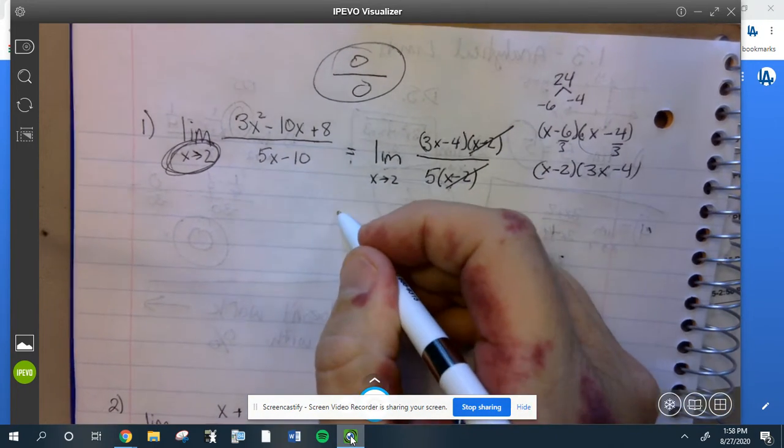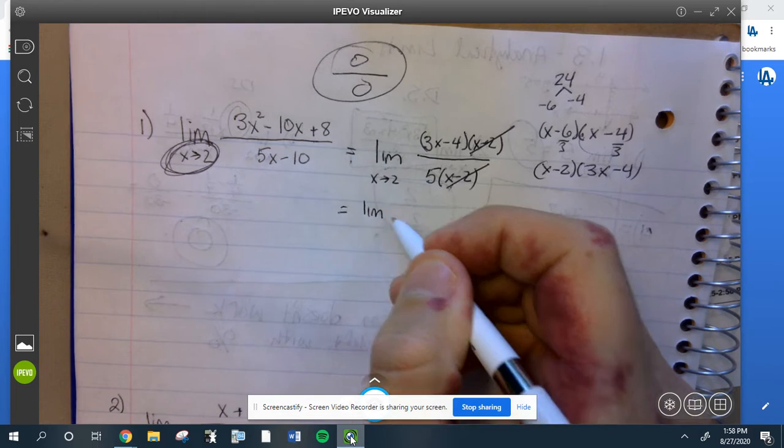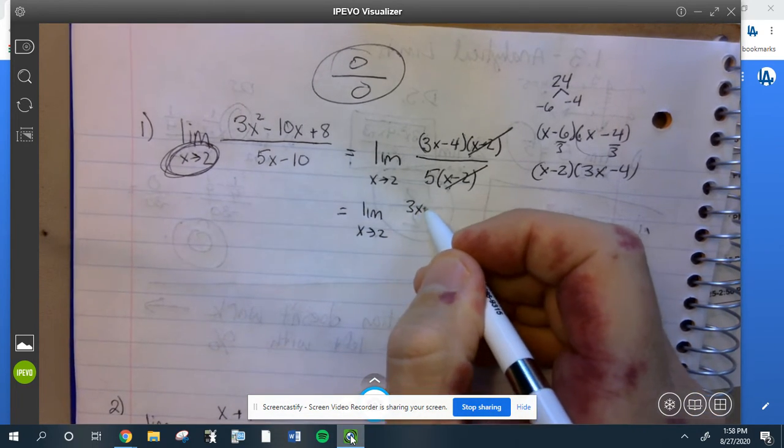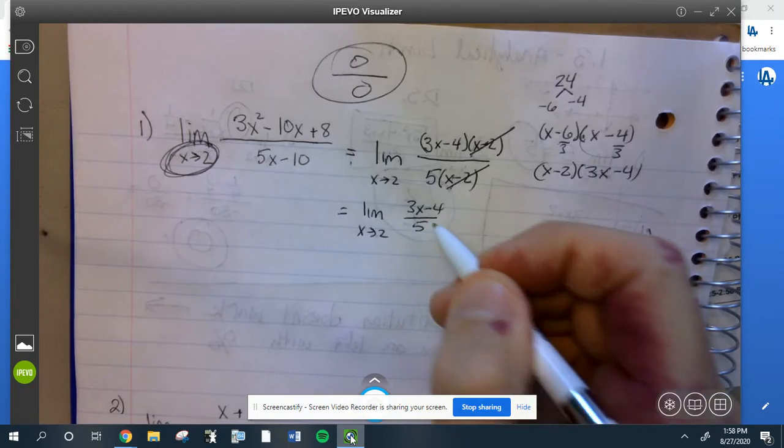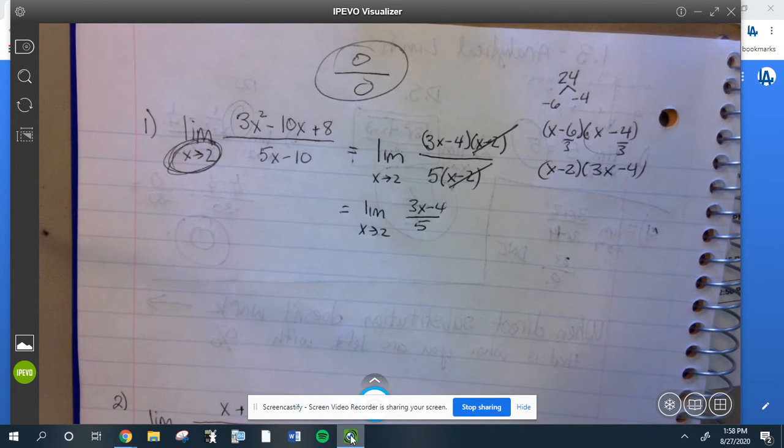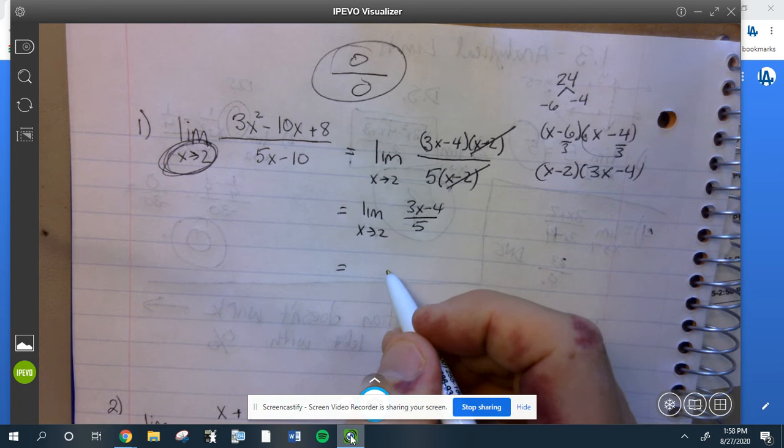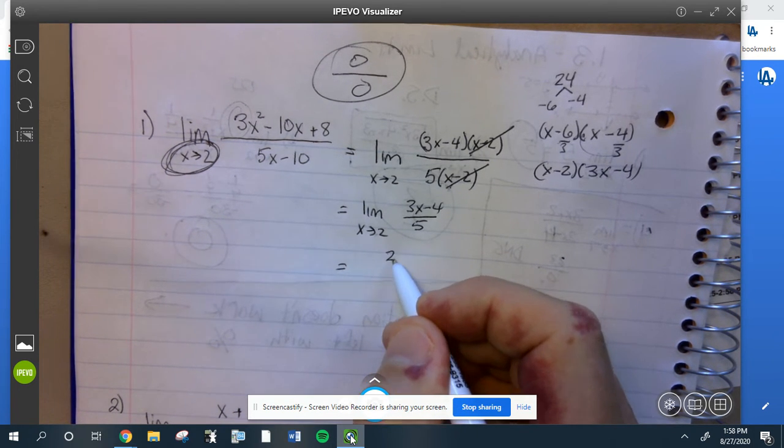So this equals the limit as x goes to 2 of 3x minus 4 over 5. Now you go back to your direct substitution, which is 3 times 2 is 6 minus 4, which is 2 over 5.